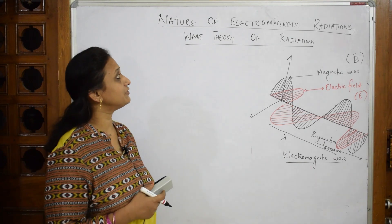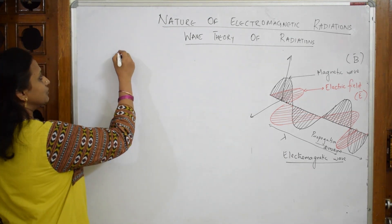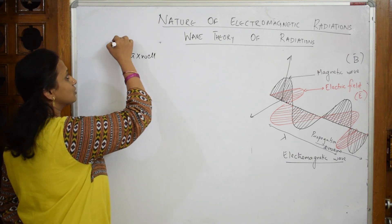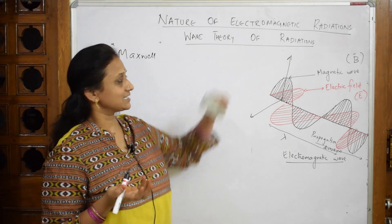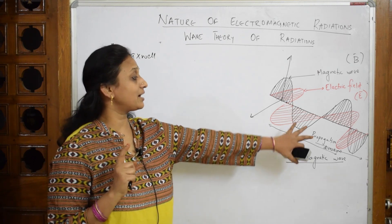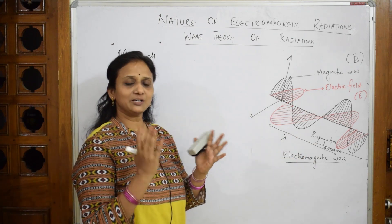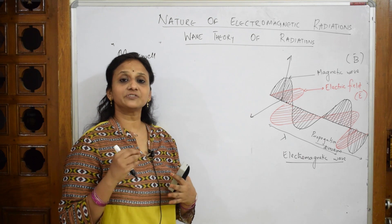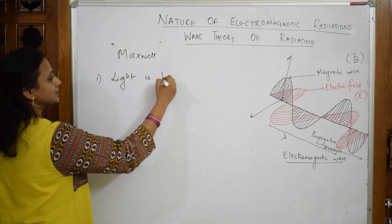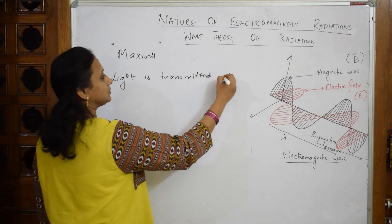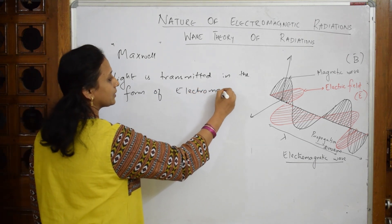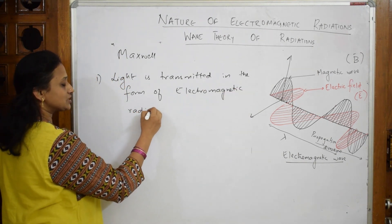When I speak about the wave theory of radiations, the first important wave theory after Huygens was given by Maxwell — Maxwell's wave theory. What did he say? He said light is a form of energy, and whenever light travels it is transmitted in the form of electromagnetic radiation.